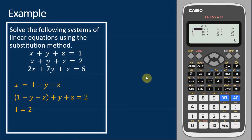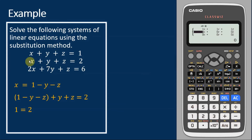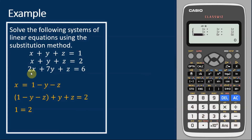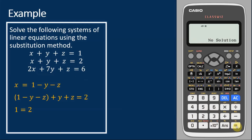Let's verify using the calculator. Entering the coefficients of the three equations: for the second equation the third coefficient is 1 and the constant is 2; for the third equation the coefficients are 2, 7, 1 and the constant is 6. The calculator confirms that there is no solution for this system of linear equations, which matches our result.